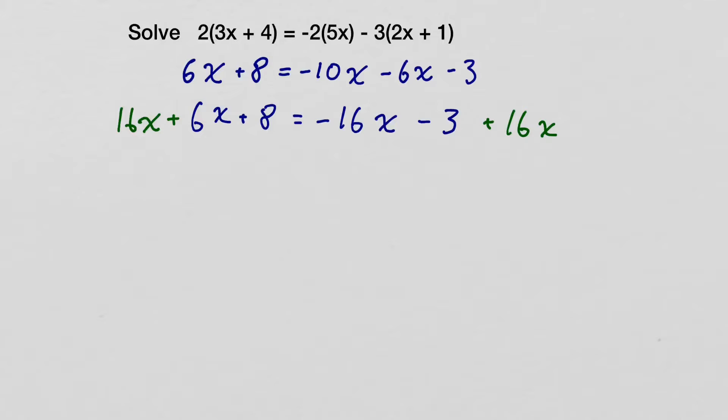That will end up to cancel those off. So we get 16x plus 6x. Well, that gives us 22x. 22x plus 8 equals negative 3. It's negative 3 because this negative 16 cancels off with the positive one that we added in. And we added one to the other side because, well, whatever we do to one side, we have to do to the other.